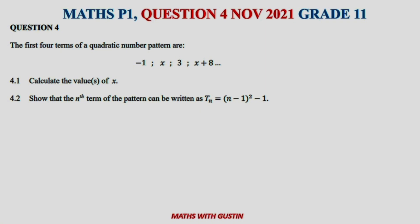We have four terms: t1, t2, t3, and t4. They have already told us that these are the four terms of a quadratic pattern. When we see a quadratic pattern, we are already expecting a pattern that has a first difference and also a second difference where there is a common difference.